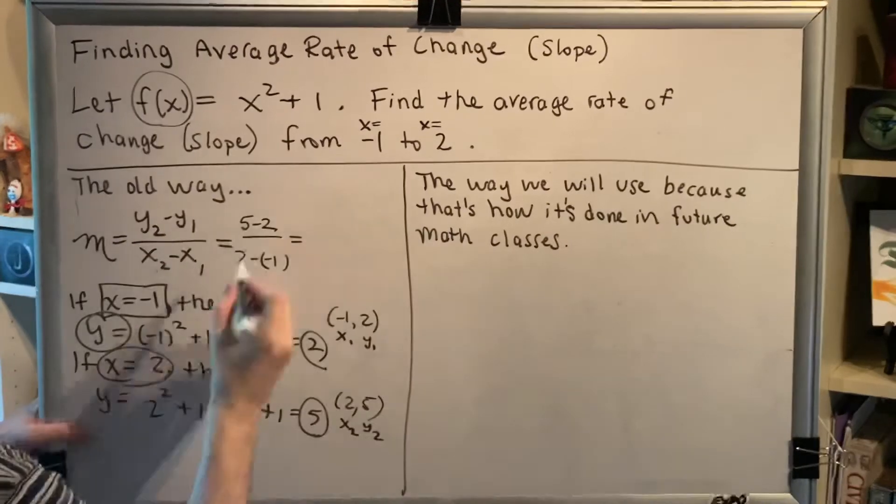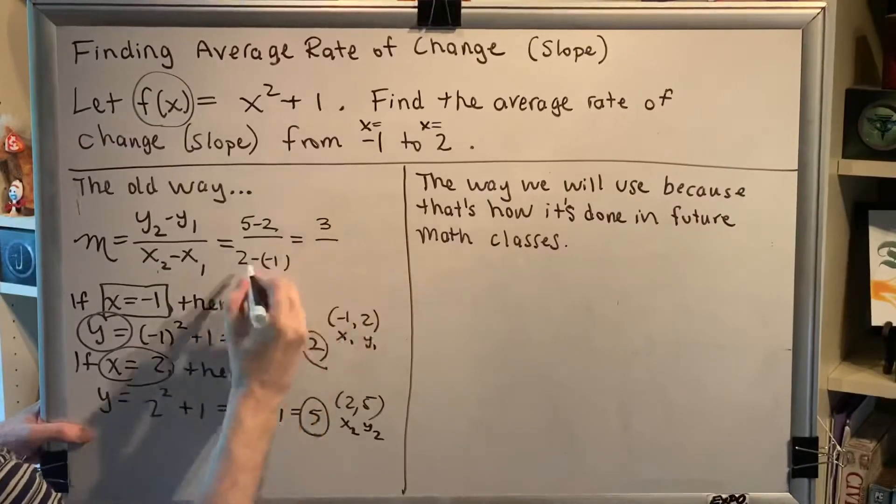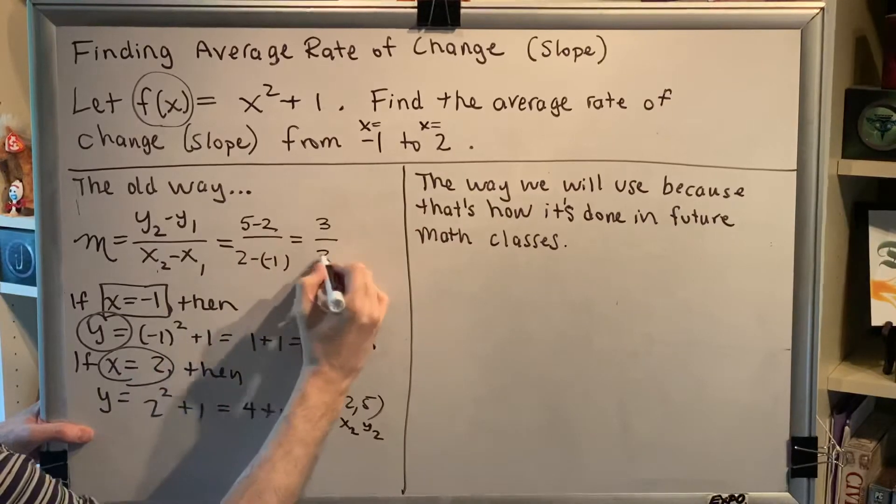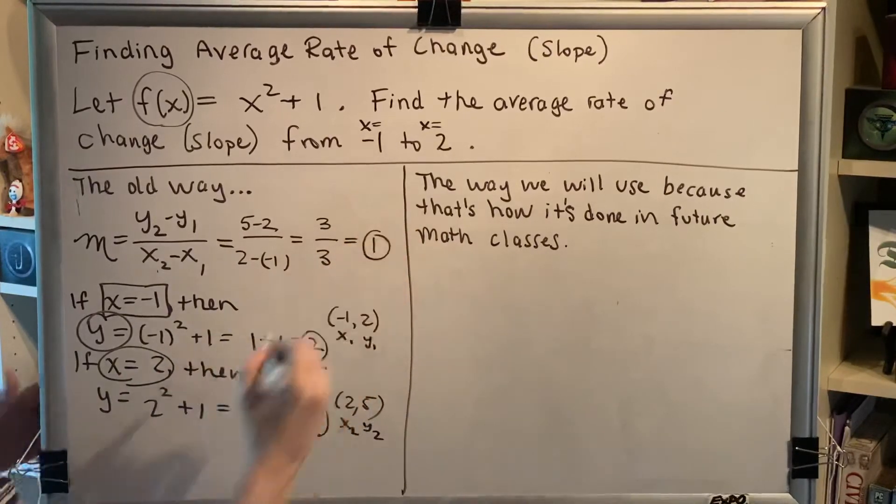All right, now we simplify. 5 minus 2 is 3, 2 minus negative 1 is 3, and so the slope is 1.